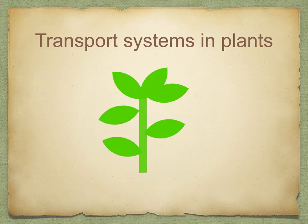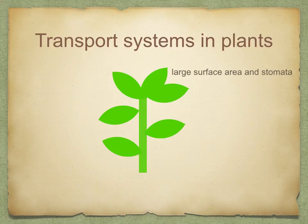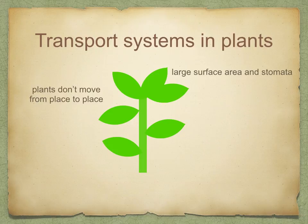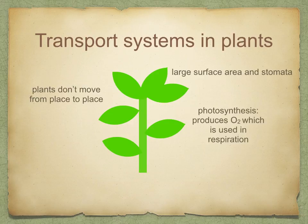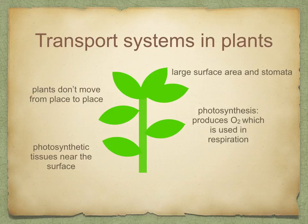Let's have a look at transport systems in plants. Plants don't need to transport as many materials as animals do. They don't need to transport respiratory gases in bulk because most gases they use or make are produced or acquired by the leaves, which have a large surface area. These gases can diffuse directly through the stomata. Plants don't move from place to place, so energy requirements are low — they don't use as much ATP and thus don't need as many respiratory gases. In light, the plants photosynthesise and produce oxygen, which is used in respiration, and most photosynthetic tissues are near the surface so diffusion can meet the needs of cells.